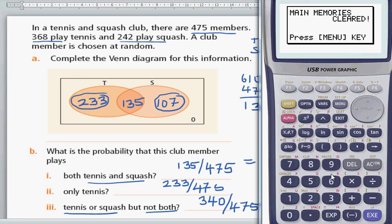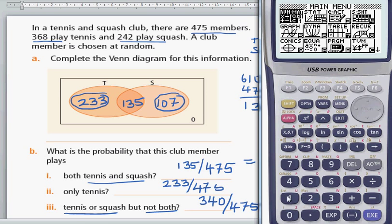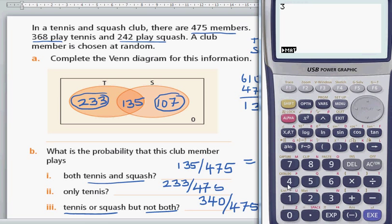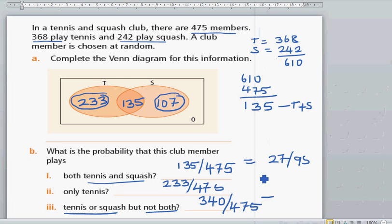So that is 340. Let's go to the run manual: 340 divided by 475 equals 68 out of 95. 68 out of 95. See you in the next video.